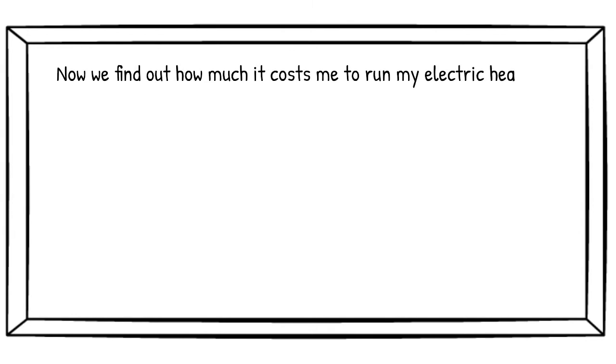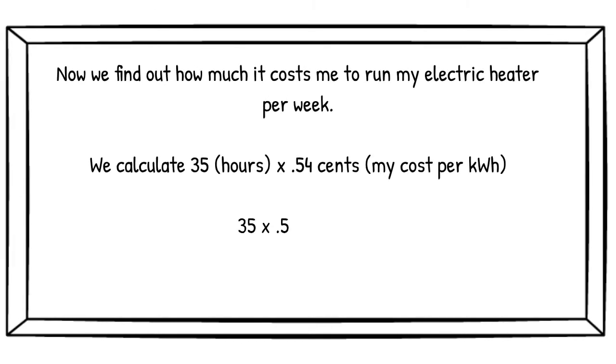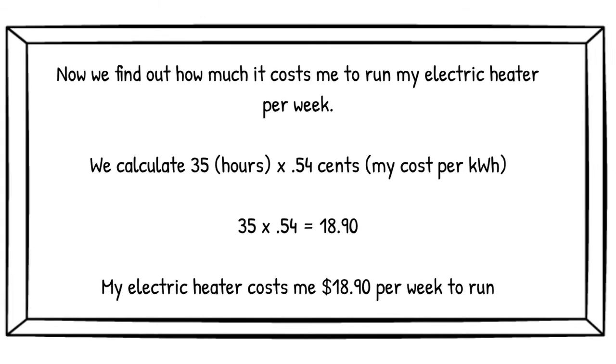Now we can calculate the weekly cost of running our appliance. Again, I'll use my electric heater for this example. So I know I use it 35 hours a week and that I calculated the hourly running cost to be 54 cents. So now we do 35 times 0.54, which equals 18.90. So my electric heater costs me $18.90 per week to run.